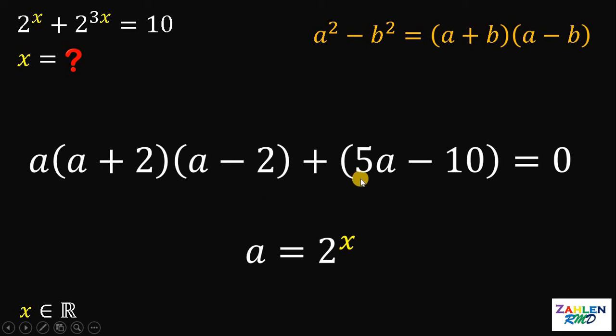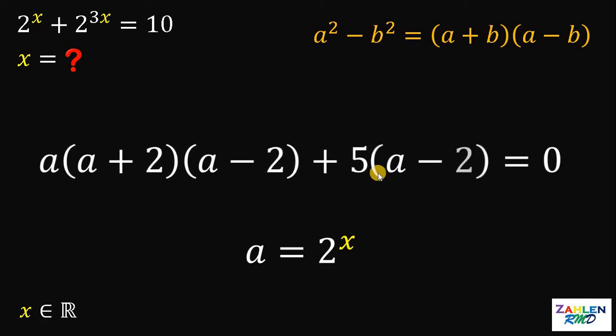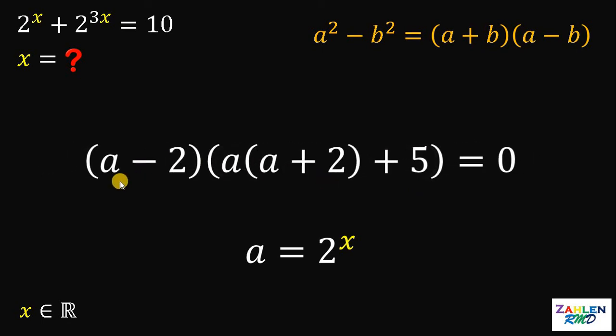Here we go. If you factor out 5 in these last two terms, this will give us 5 times a minus 2. So, we have now a common term of a minus 2. We can factor out a minus 2. This will give us a minus 2 multiplied by a times a plus 2 plus 5.